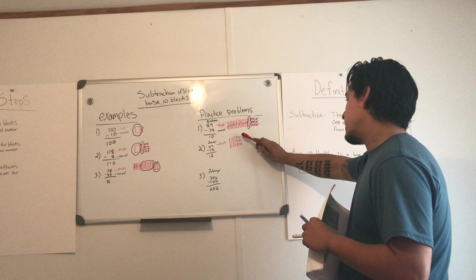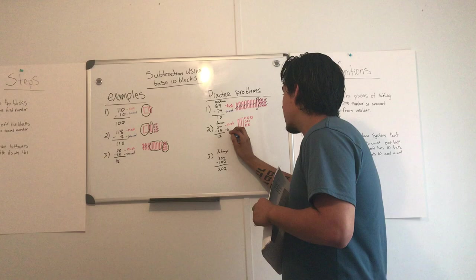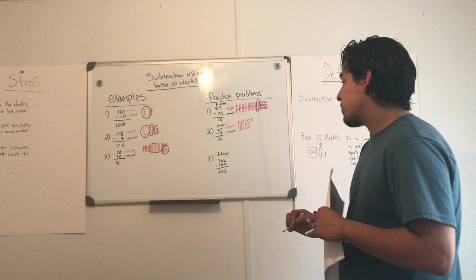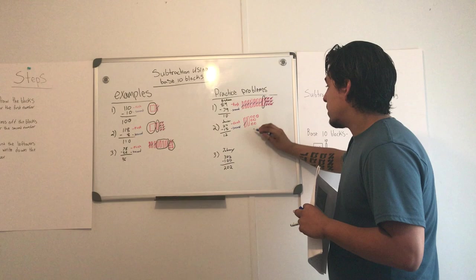And then he went to his second number and crossed off the blocks for the second number. So he knows there is one bar, and then there's five.